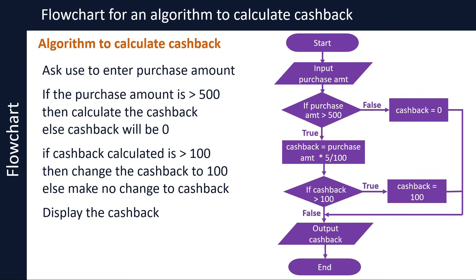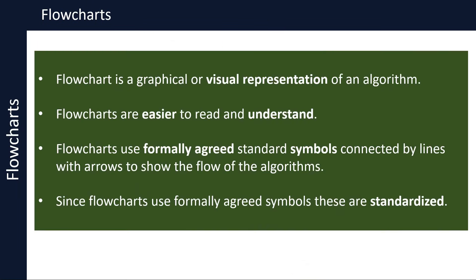I hope you will now be able to draw flowcharts to represent simple algorithms. Let's recap: a flowchart is a graphical or visual representation of an algorithm. Flowcharts are easier to read and understand. They use formally agreed standard symbols connected by lines with arrows to show the flow of the algorithm, and since these are formally agreed symbols, they are standardised. We will take a look at pseudocode in part 2 of this two-part video presentation.